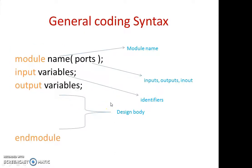Let us see the general coding syntax. In this Verilog module, if you are trying to write any coding, it always needs to start with a module. Everything we are going to call here is a module. The module consists of a name. If you are designing any module, we need to give a name, and for naming there are certain rules you need to follow. You always need to start with a character name; it should not start with any numbering or special characters. After a character, you can use numbering and all those things. Then you need to write in parentheses.